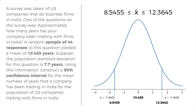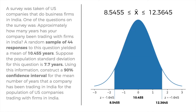If you graph this on a normal distribution, the center is 10.455. The value 8.5455 is located on the left side of the mean, and 12.3645 is on the right side. You shade the area contained between the two values of X. There is 90% confidence that the true mean can be found between these values.